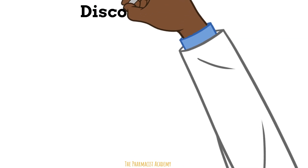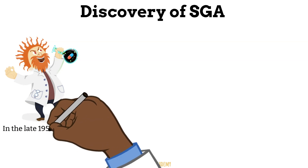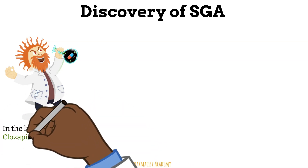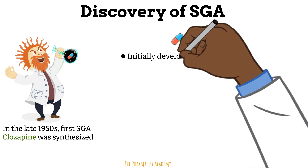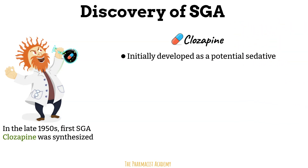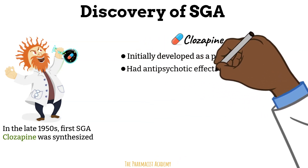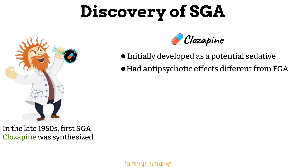Let's learn about the story behind the discovery of the second generation antipsychotics. After the first generation antipsychotics, researchers were looking for alternatives that could be equally effective but with fewer side effects. In the late 1950s, the first ever second generation antipsychotic was synthesized — this was clozapine. Clozapine was initially developed by a team at Sandoz in Switzerland as a potential sedative, but further testing revealed its antipsychotic effects that were distinct from the first generation antipsychotics. Despite the promising findings, clozapine did not immediately stand out in clinical practice.